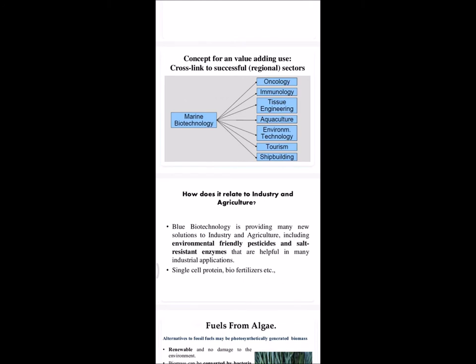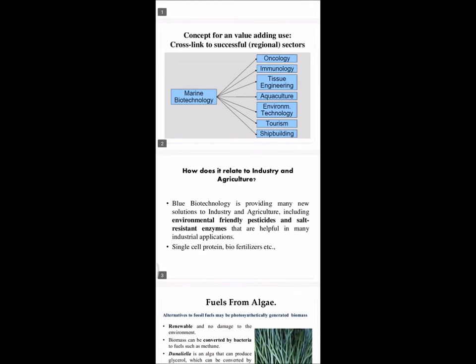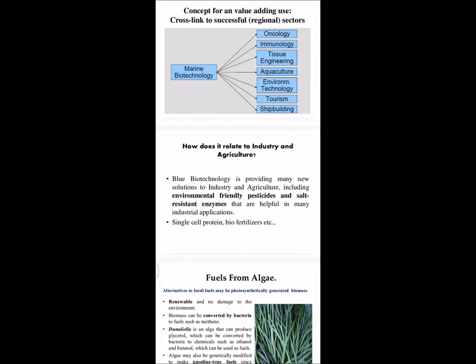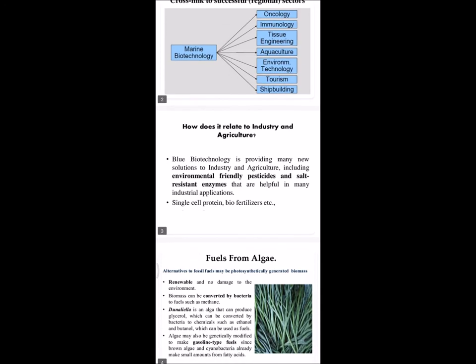The third sector is tissue engineering, where marine resources are utilized. The fourth is aquaculture, also known as aqua farming — the farming of aquatic organisms like fish, molluscs, and aquatic plants. The fifth sector is environmental technology, as marine resources are an important part of the environment and are used in environmental technology.